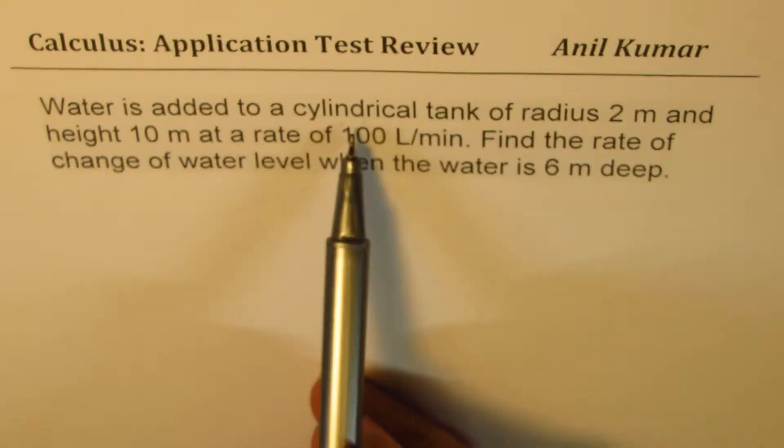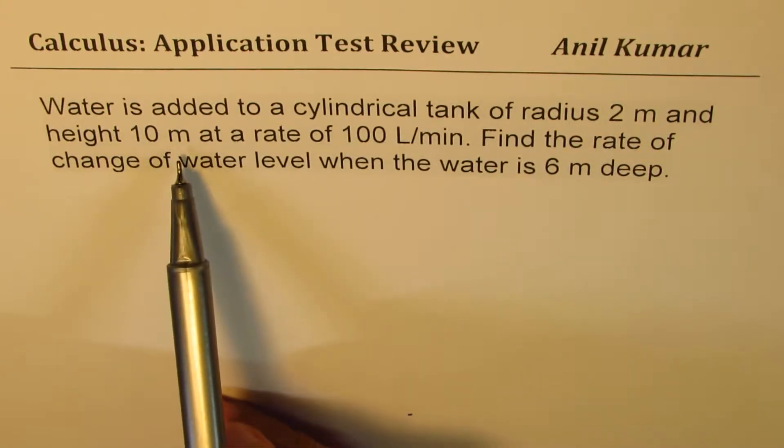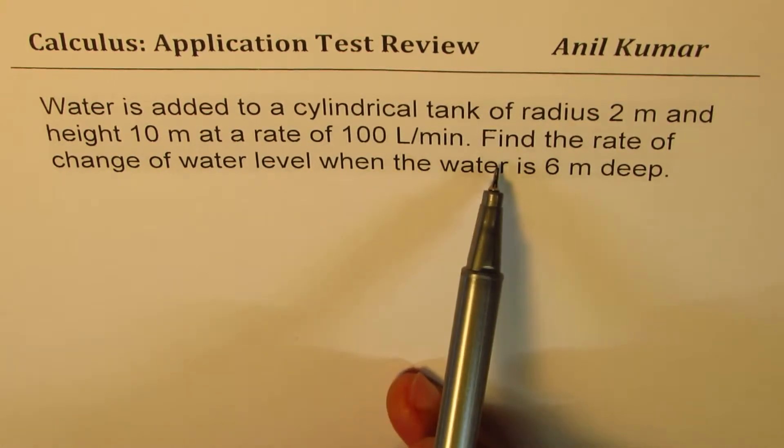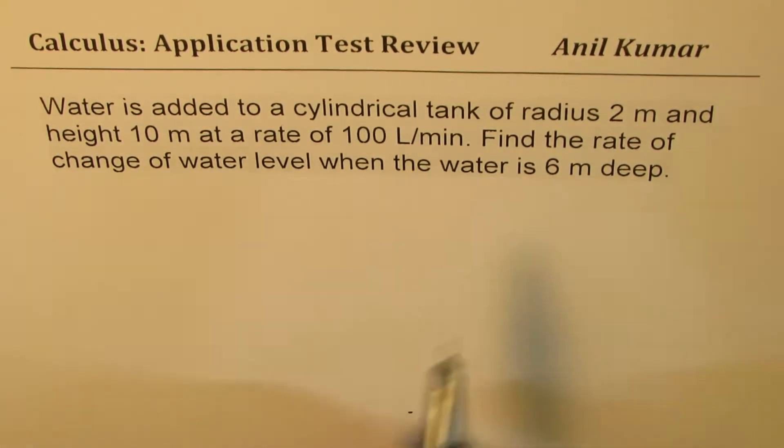Water is added to a cylindrical tank of radius 2 meters and height 10 meters at a rate of 100 liters per minute. Find the rate of change of water level when the water is 6 meters deep.